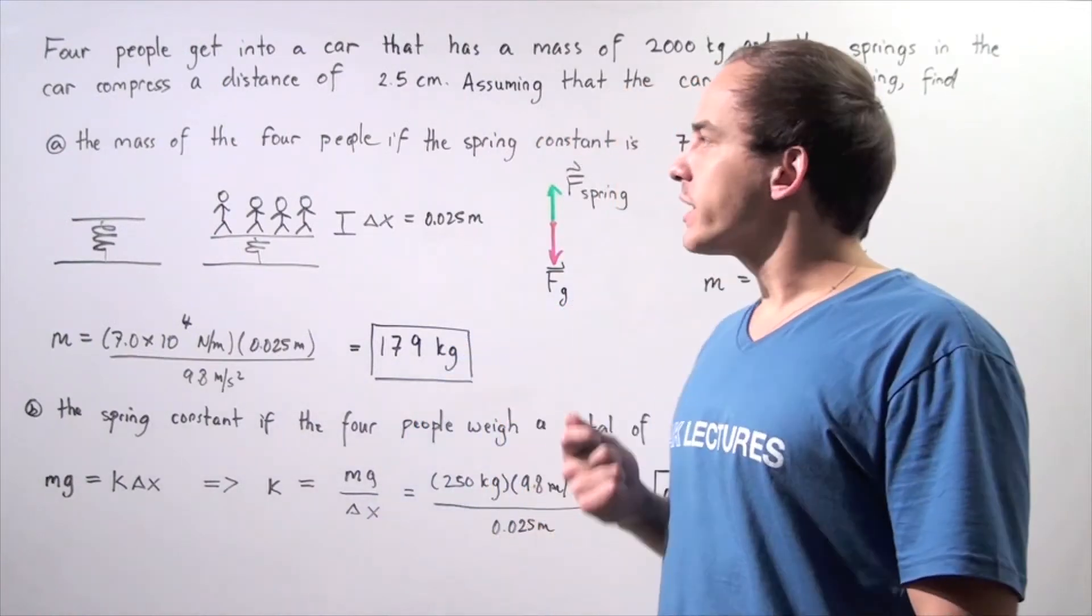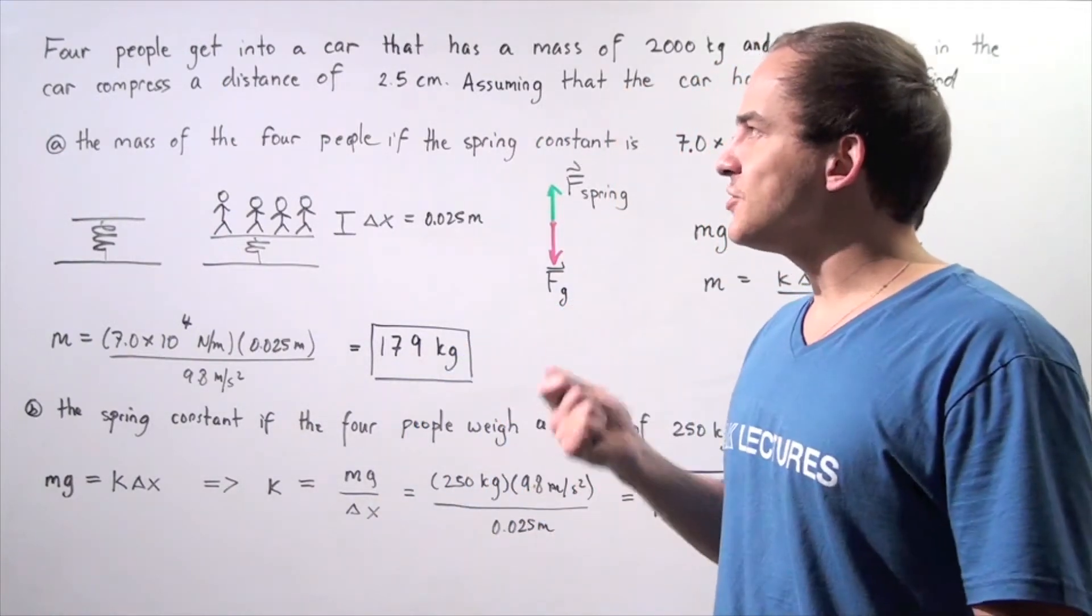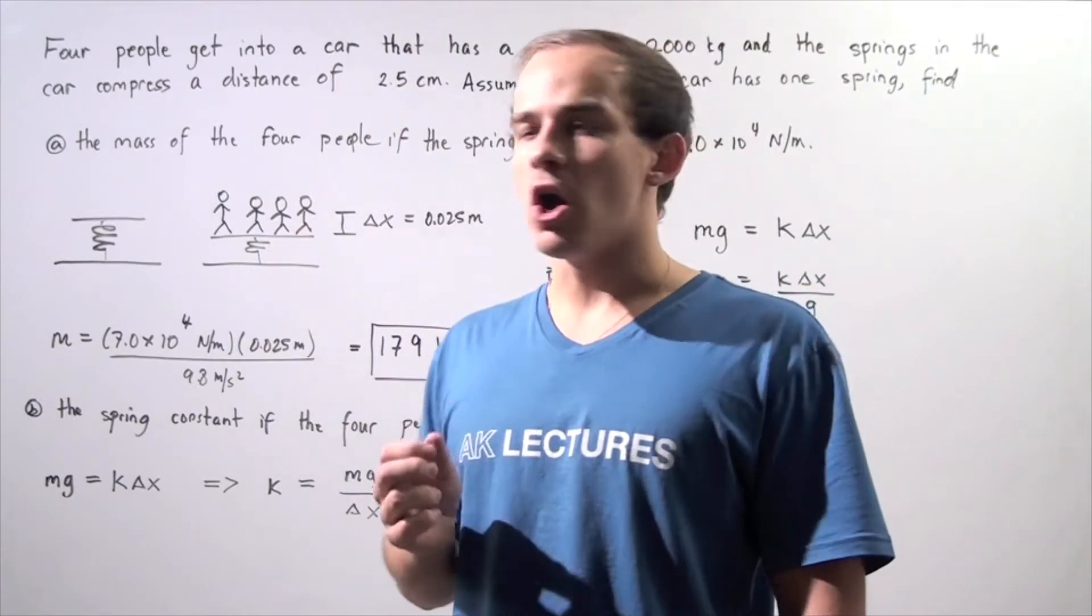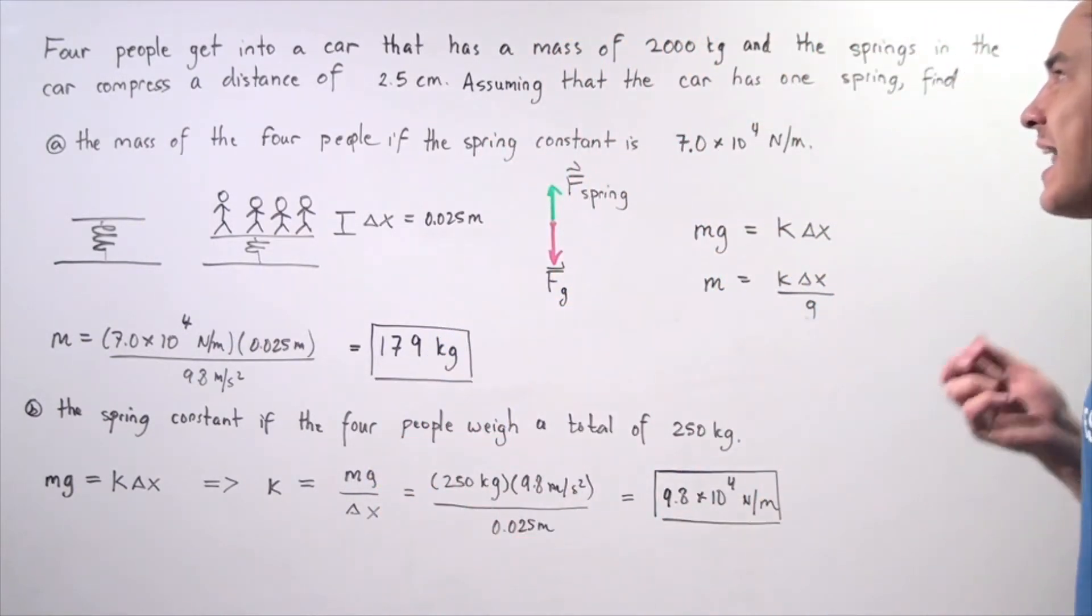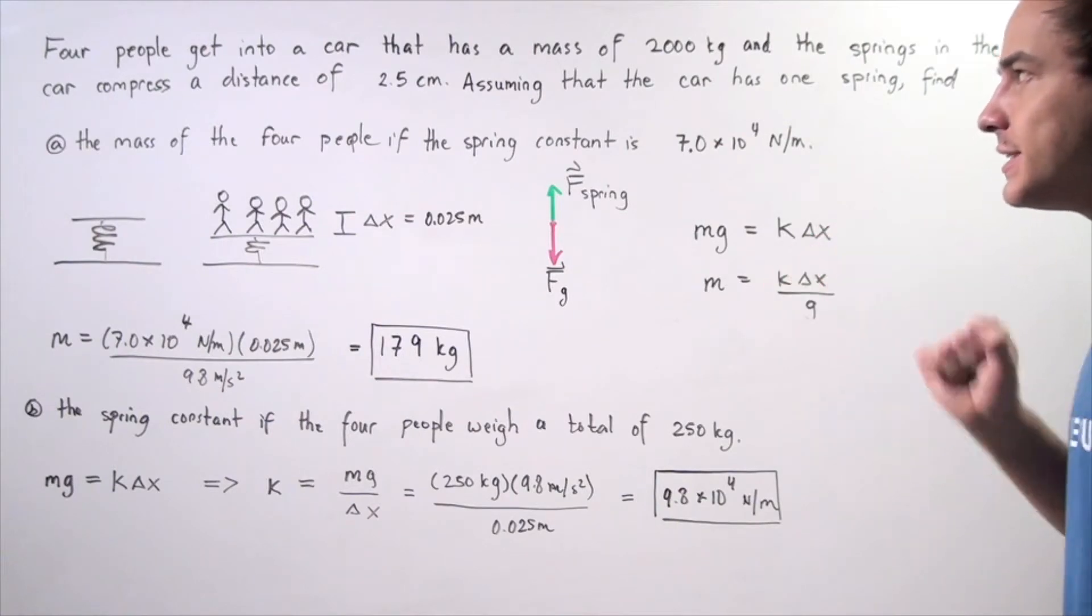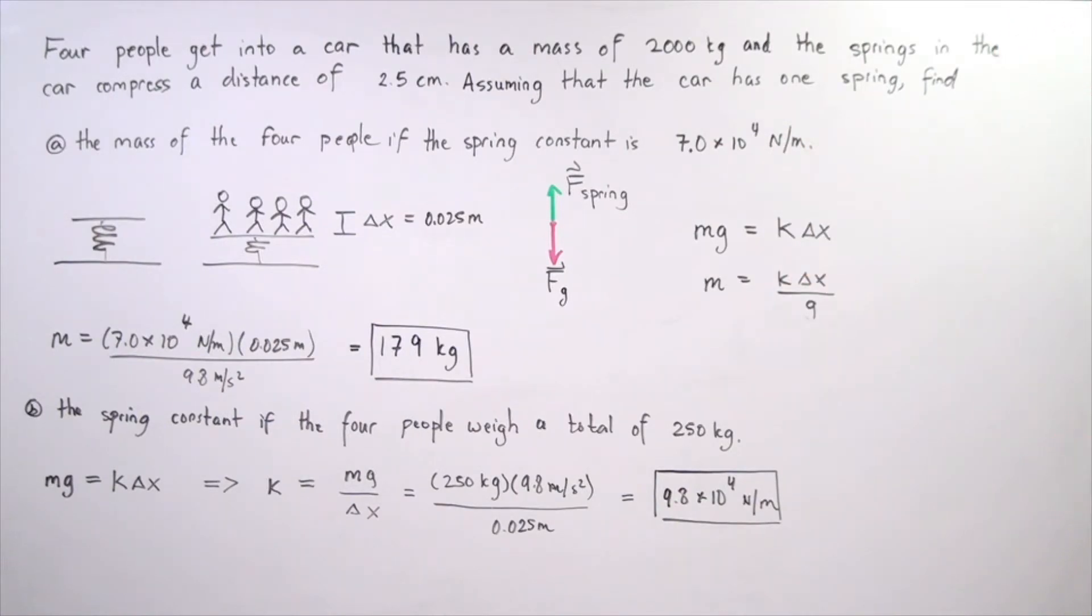Let's examine the following example in which we essentially have to apply Hooke's Law. Four people get into a car that has a mass of 2,000 kilograms, and the springs in that car compress a vertical distance of 2.5 centimeters.